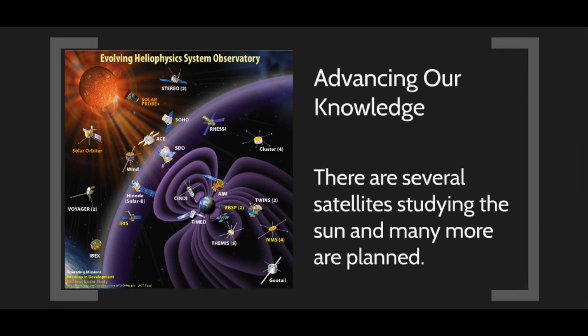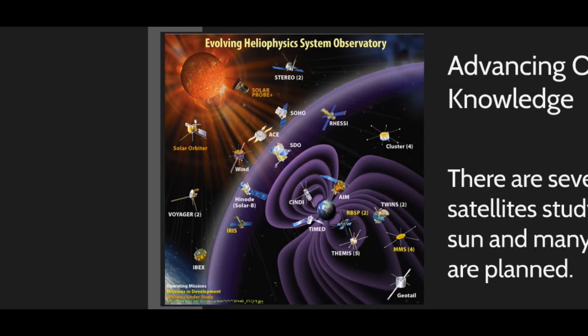We are advancing our knowledge of the Sun through several observatories and satellites, including SOHO and the Solar Dynamics Observatory. There are also proposed missions such as a solar probe. Understanding the Sun is increasingly important as we become more dependent on technology. The chances of a solar event damaging our technology or energy grid are not small, so making accurate predictions is a high priority.